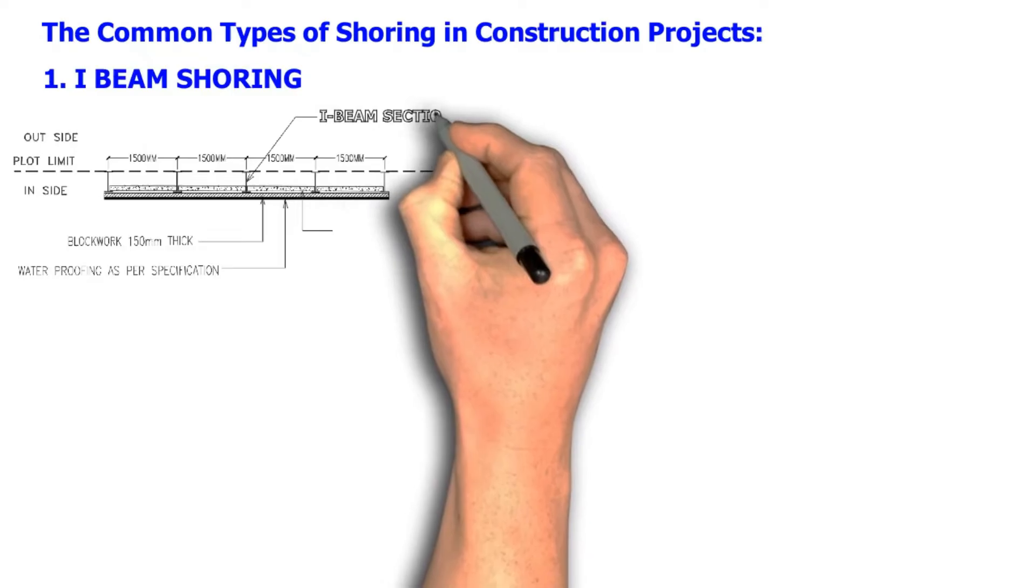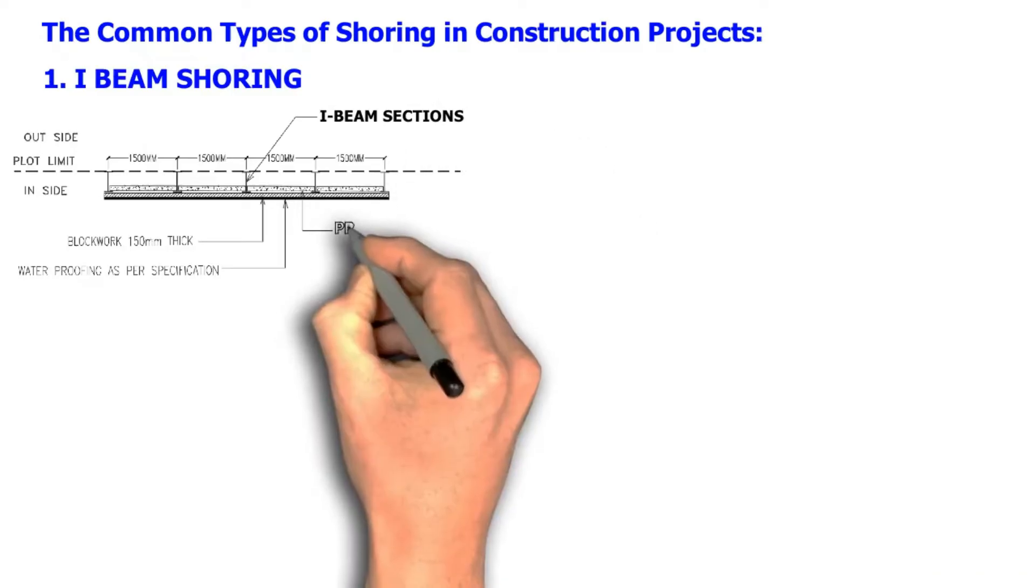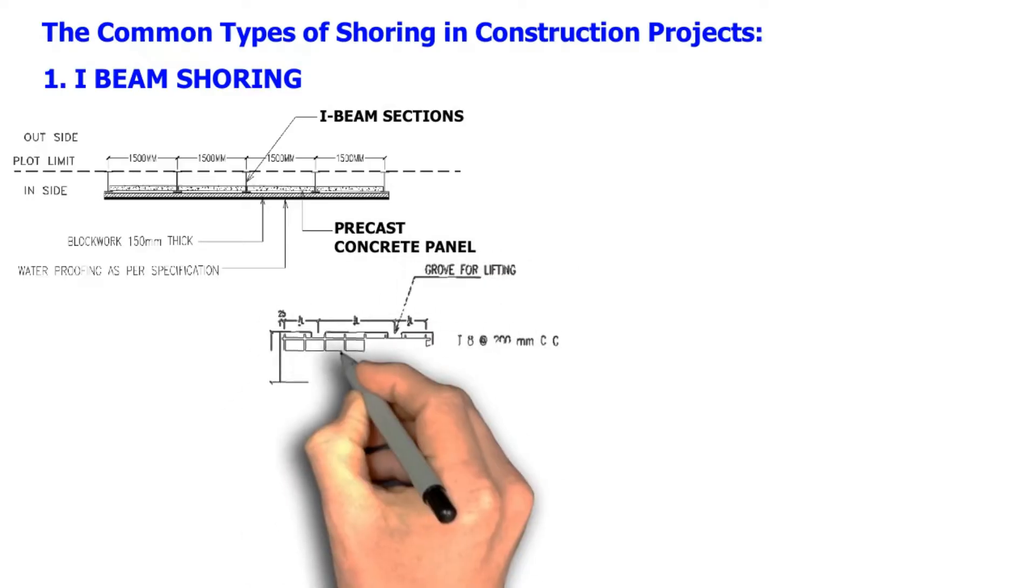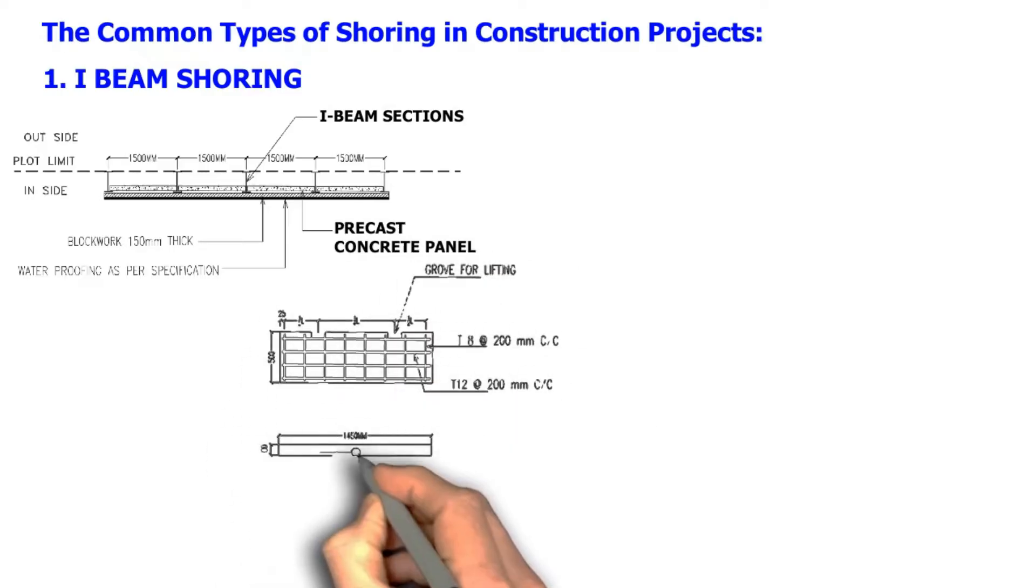It is constructed by driving prefabricated steel I sections into the ground. Soil conditions may allow for the sections to be vibrated directly into the ground instead of pre-drilling of soil before installing the beam.